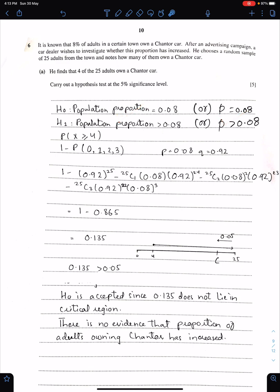Now we need this probability. We just need to check whether this test value lies in critical region or not. So we can find this probability with the help of this thing: 1 minus 0, 1, 2, 3. And this probability is 0.135, which means 13.5%. And 13.5% does not lie here. This area is of 5%. This means 4 is not in critical region. So you should accept H0. Since this is greater than 5%, therefore H0 is accepted. Hence, there is no evidence that the proportion of adults owning C car has increased. We just need to reject the claim.